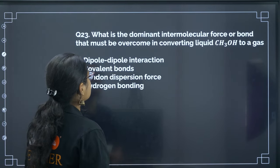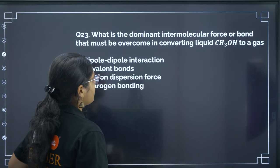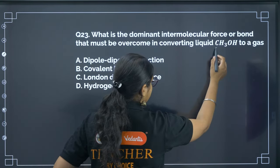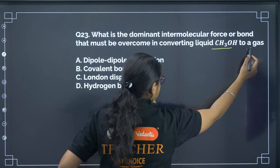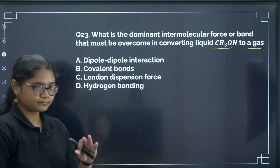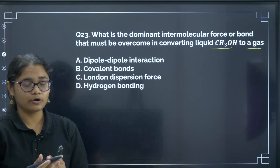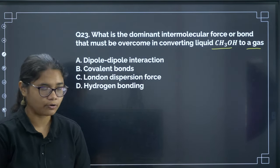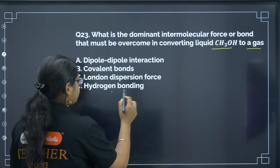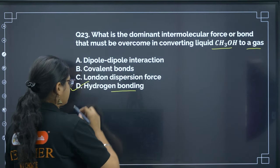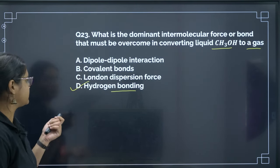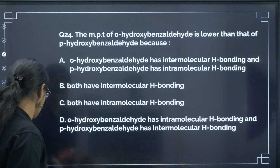Next: what is the dominant intermolecular force to overcome in converting CH3OH to gas? Alcohols form very strong hydrogen bonds, so hydrogen bonding must be overcome. The correct answer is option D.